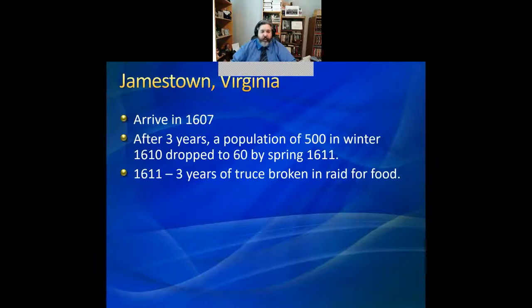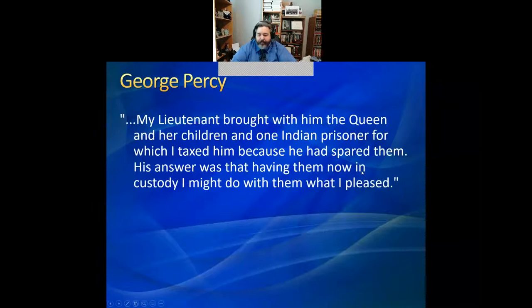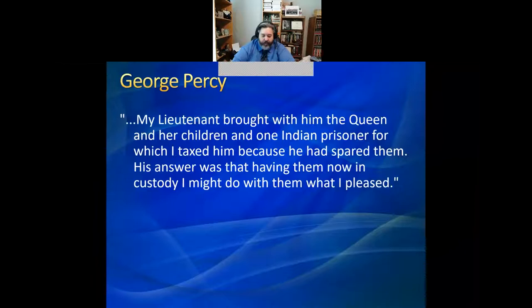These people were in every way dependent on the Native Americans. So of course, how they settled their problems — they simply attacked Native Americans. One of the lieutenants of the Virginia militia, a man named George Percy, wrote in his journal of orders that he attacked an Indian village with the plan of extracting corn. He wrote: 'My lieutenant brought with him the queen and her children and one Indian prisoner, for which I taxed him because he had spared them.'